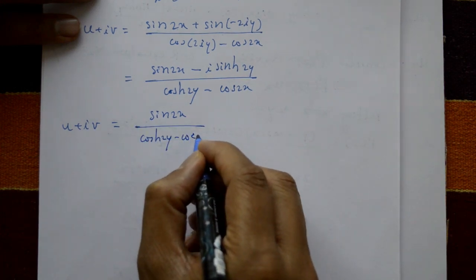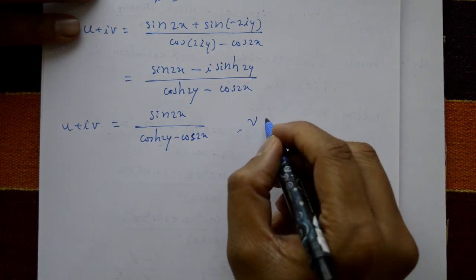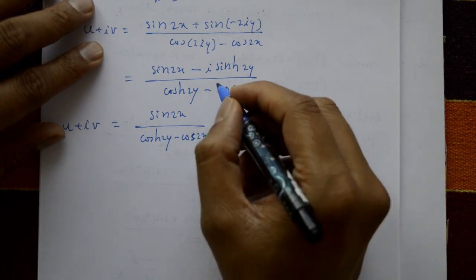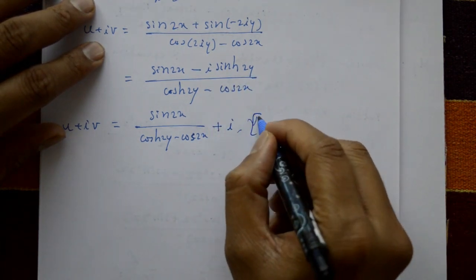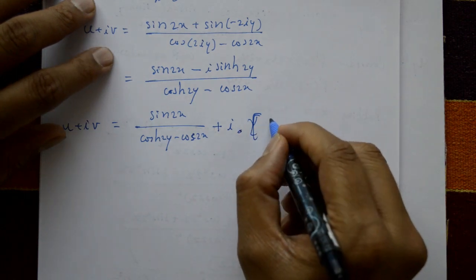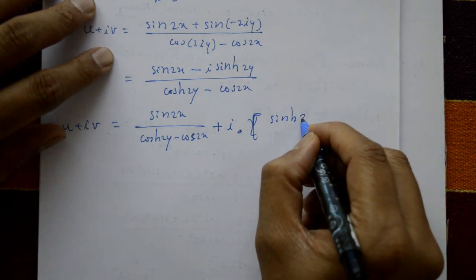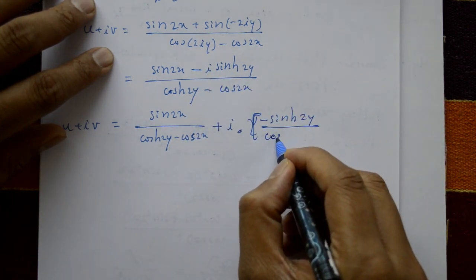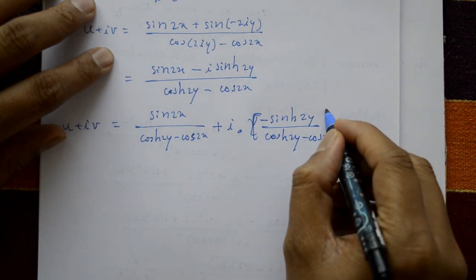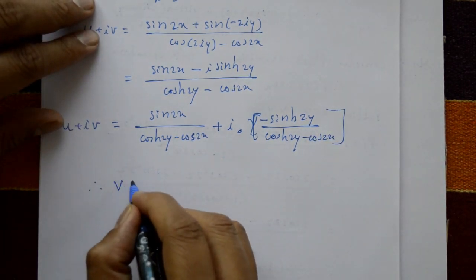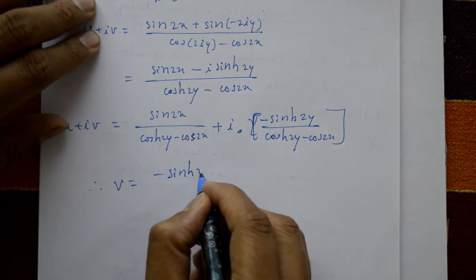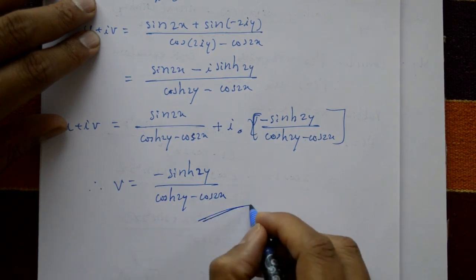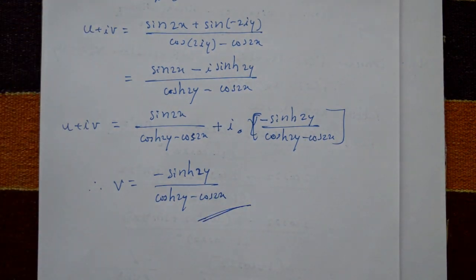Separating real and imaginary parts: u + iv = sin(2x)/(cosh(2y) - cos(2x)) + i·[-sinh(2y)/(cosh(2y) - cos(2x))]. Therefore the imaginary part v = -sinh(2y) / (cosh(2y) - cos(2x)). This is the required solution.